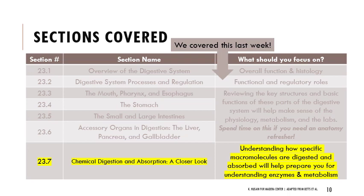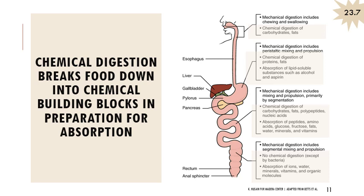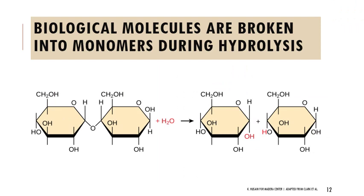Getting into Chapter 23 and finishing it up — last week we covered sections 1 through 6, and today we'll specifically talk about section 7. You should focus on understanding how specific macromolecules are digested and absorbed, which will help you understand enzymes and metabolism. When thinking about chemical digestion rather than mechanical digestion, we're really getting into the building blocks that make molecules — breaking stuff down into constituent parts so we can absorb it.